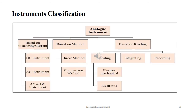Continuing from the previous classification, analog instruments are broadly categorized into three groups: based on measuring current, based on method and based on reading. Based on measuring current, they are categorized into DC instrument, AC instrument and AC-DC instrument. Based on method, it can be direct or comparison method. Based on reading, it can be indicating, integrating and recording. The indicating types are electromechanical or electronic in nature.